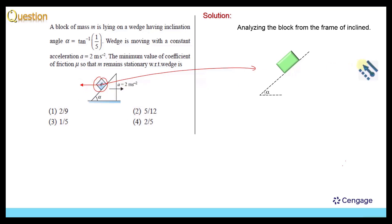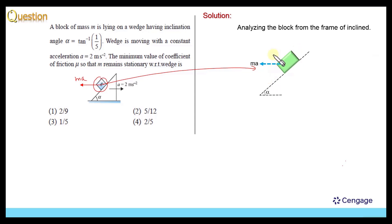This is the direction of the pseudo force, and the magnitude of this should be equal to mass multiplied by acceleration. So this is our pseudo force, and here in this case it will be better to analyze the forces parallel to the inclined surface and perpendicular to the inclined surface. This is the component of the pseudo force parallel to the inclined surface: MA cos α, and perpendicular to the inclined surface: MA sin α.